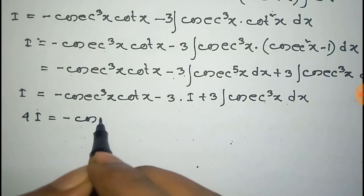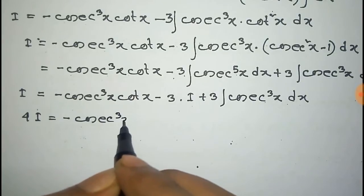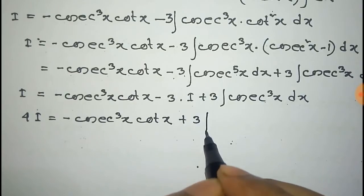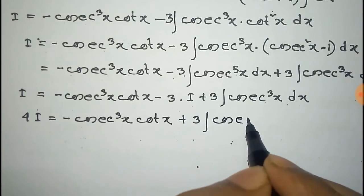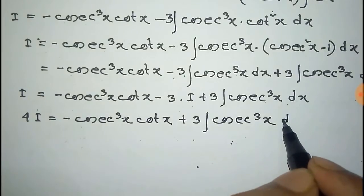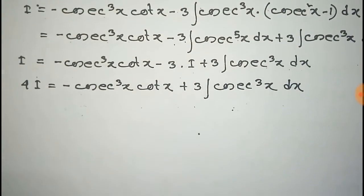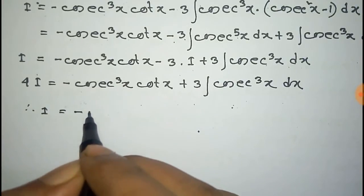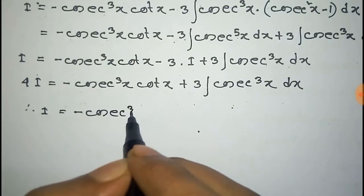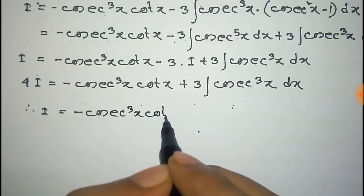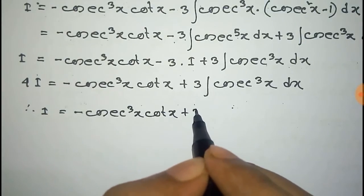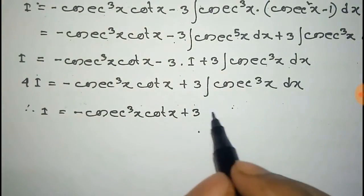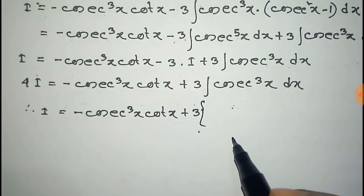So 4I is equal to minus cosec to the power 3x into cot x plus 3 integration of cosec to the power 3x dx. Therefore I equals minus one-fourth cosec cube x into cot x plus 3 times the integration of cosec cube x. The integration of cosec to the power 3x was determined in our another video.